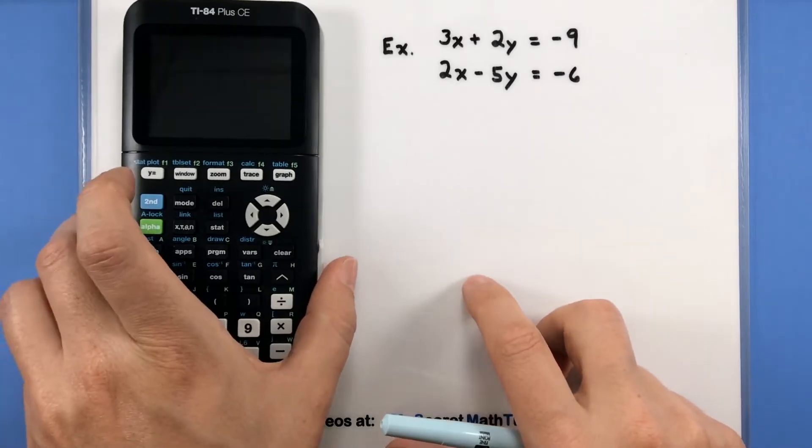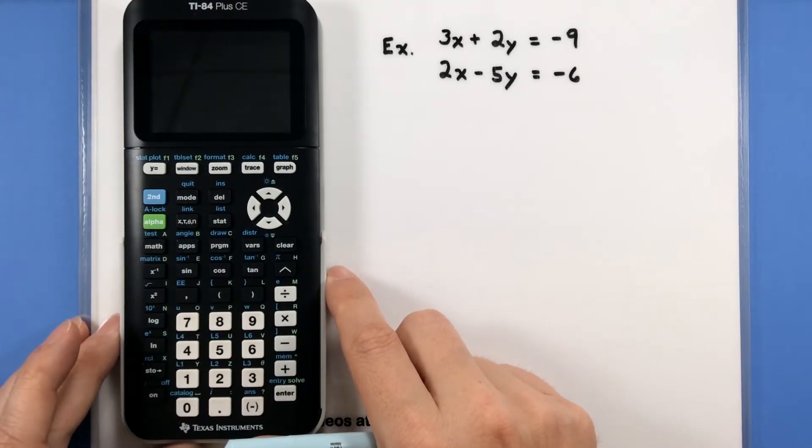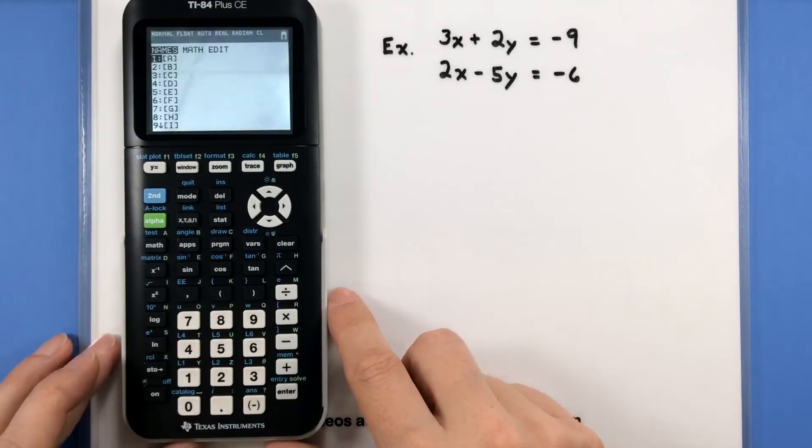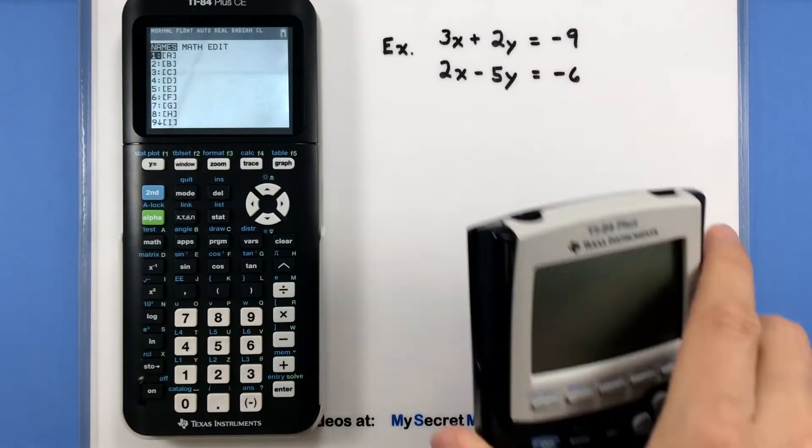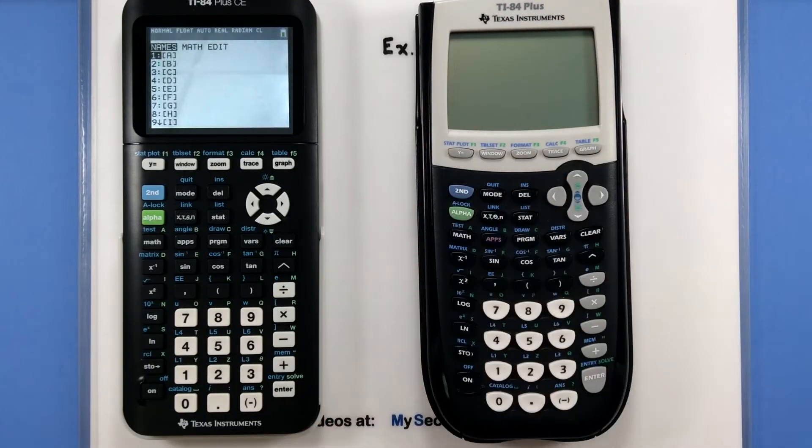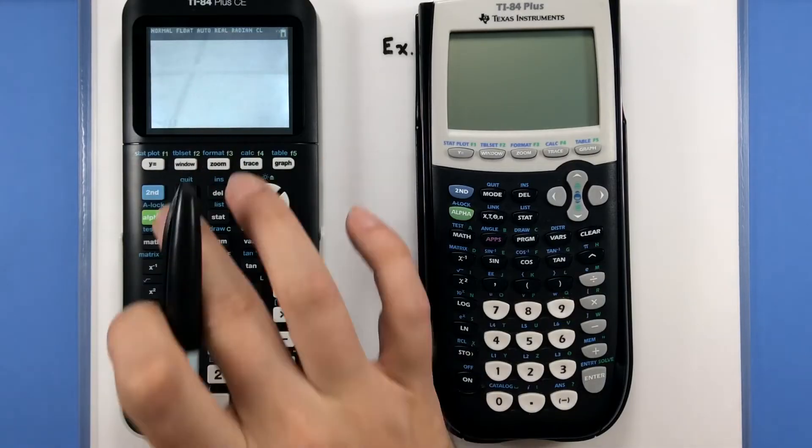I'll be using my TI-84 Plus CE, so this has a nice color screen, nice and sharp. But if you happen to be using the 83 or 84, do not worry, this has the same menu system. It's just a little bit different in how it looks, but all the steps are exactly the same. Let's go ahead and get started.